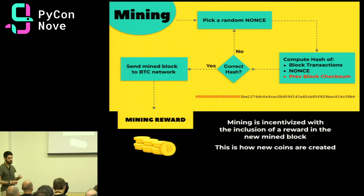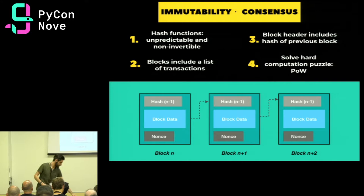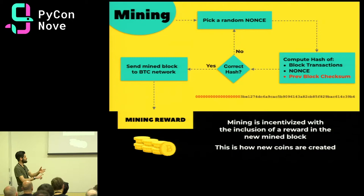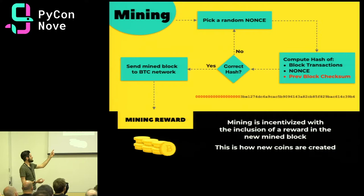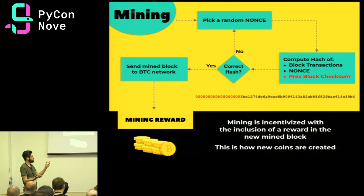Miners are special nodes in the Ethereum network that validate blocks and include them in the ledger. The mining process works like this: one miner picks a random nonce, which is inside the block — it can be a random string. It then produces the hash of the block's transactions, the previous block's checksum, and the nonce. If the hash meets a special condition — for example, a certain number of zeros as a prefix — then the block can be included in the blockchain. Otherwise, the miner picks a new nonce and computes again. This is called proof of work, and since hashes are unpredictable and non-invertible, the only way to find a hash meeting this condition is to try an enormous number of hashes.